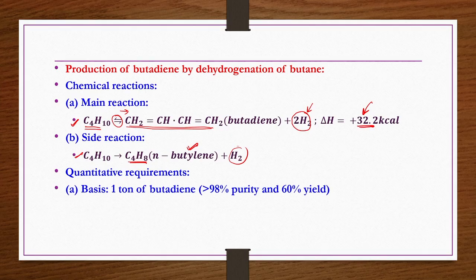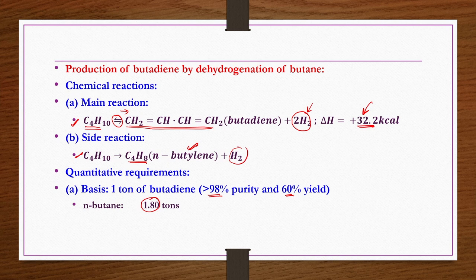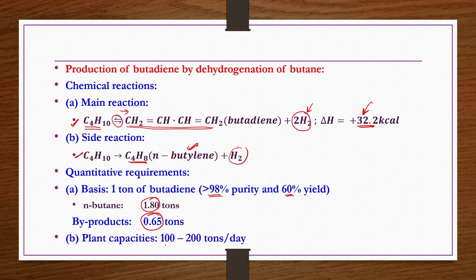Quantitative requirements: to produce 1 ton of butadiene with more than 98 percent purity at 60 percent yield, 1.8 tons of butane are required as raw material. Byproducts like butylene and other products amount to approximately 0.65 tons. Plant capacity is usually 100 to 200 tons per day.